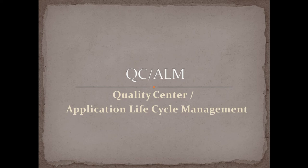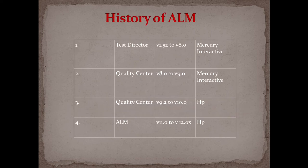Let's understand the history of ALM. When ALM started, it started as Test Director and continued from version 1.5 to version 8.0 under the company Mercury Interactive. Then Mercury Interactive renamed it from Test Director to Quality Center, and the version continued from 8.0 to 9.0.